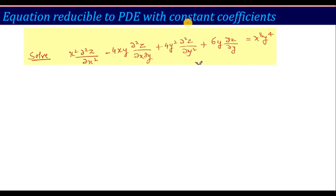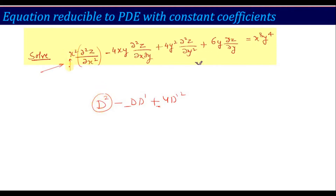So, what does 'equation reducible to PDE with constant coefficients' mean? In homogeneous and non-homogeneous equations we have seen, for example, D² − DD' + 4D'², the coefficients of D or D' are constant. But if you look at an equation where the coefficient of ∂²z/∂x² is not constant — instead it is in the form of x — and similarly coefficients involve x, y, y², then that is clearly not a constant coefficient equation.